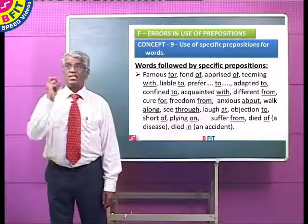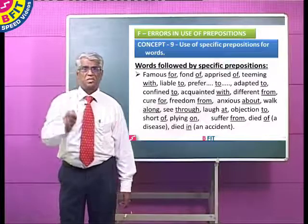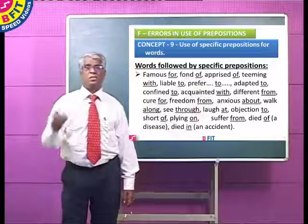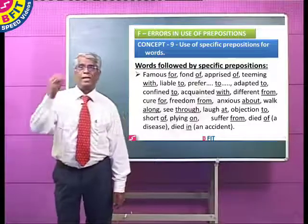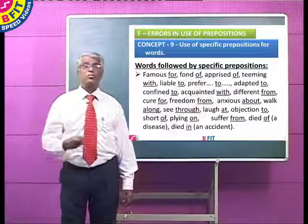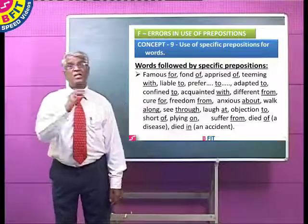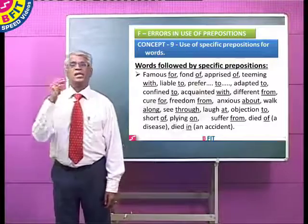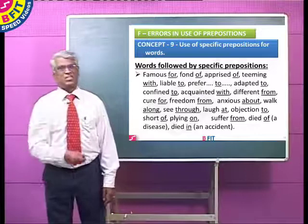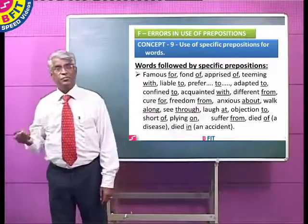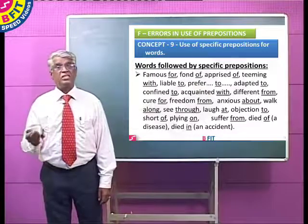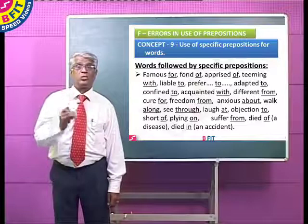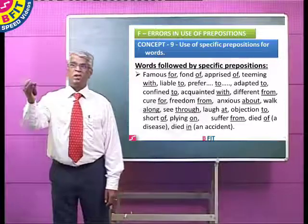There are some specific prepositions for specific words. It is better that you remember the association between certain verbs and prepositions, as that would help you solve questions on prepositions. For example: famous for. Fond of — he is very fond of milk sweets. Apprized of — meaning informed: he is apprized of the actual stock position. Teeming with — meaning busy with people: it is teeming with buyers.